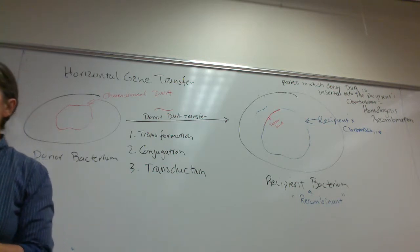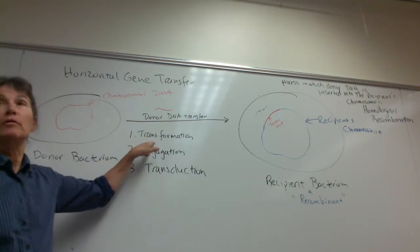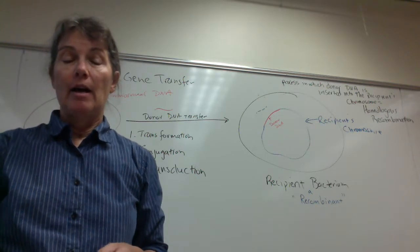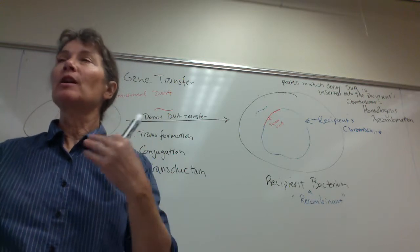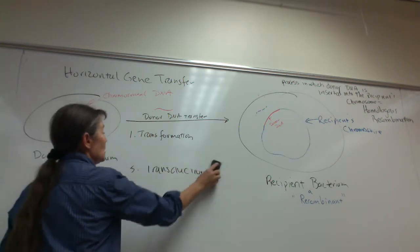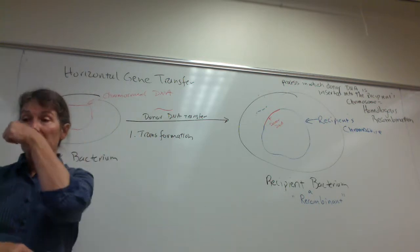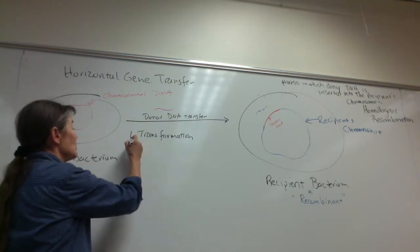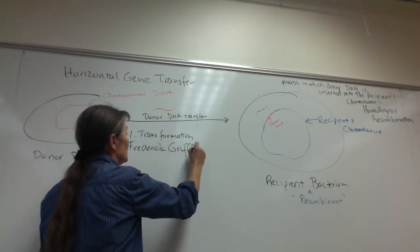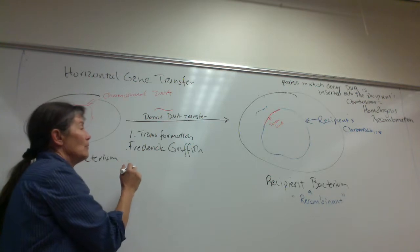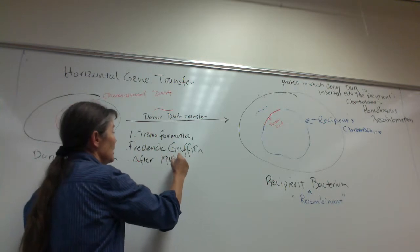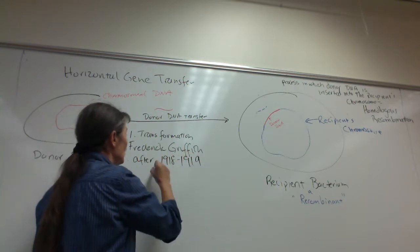The first example of horizontal gene transfer is transformation. It was first discovered by Frederick Griffith in the early 1900s — there's some really powerful history behind it. Griffith was a British scientist.